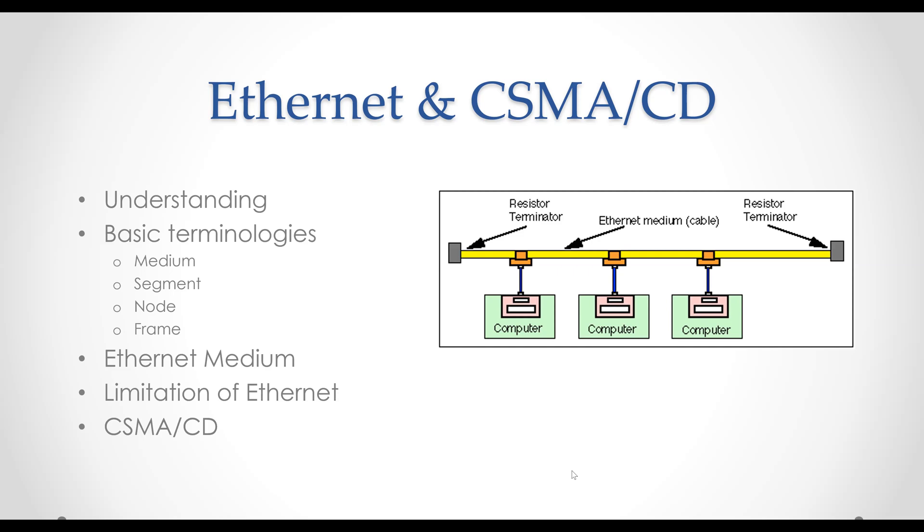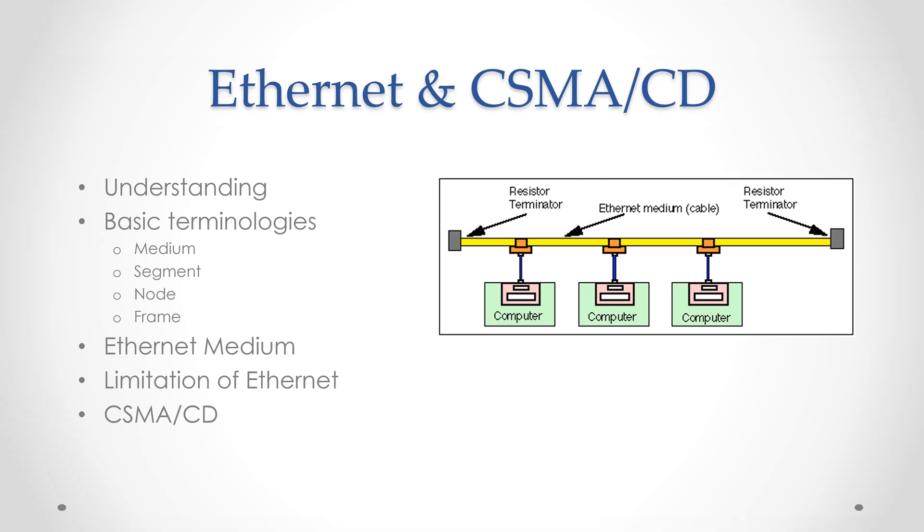This places a distance limitation on the maximum separation between two devices called a network diameter on the Ethernet network. Additionally, since in CSMA/CD only a single device can transmit at a given time, there are practical limits to the number of devices that can coexist in a single network. Attach too many devices to one shared segment and contention for the medium will increase. Every device may have to wait an inordinately long time before getting a chance to transmit.